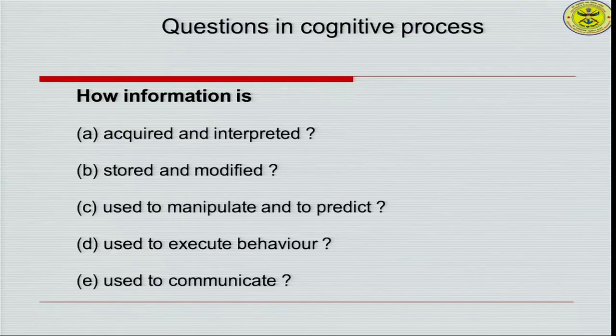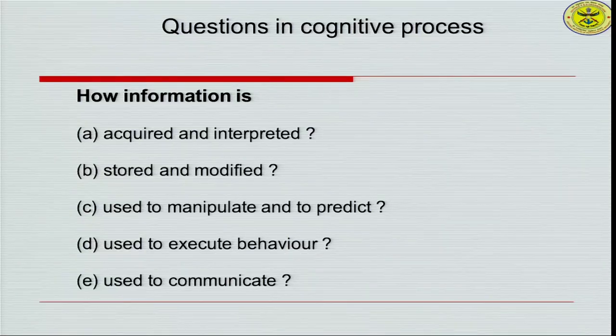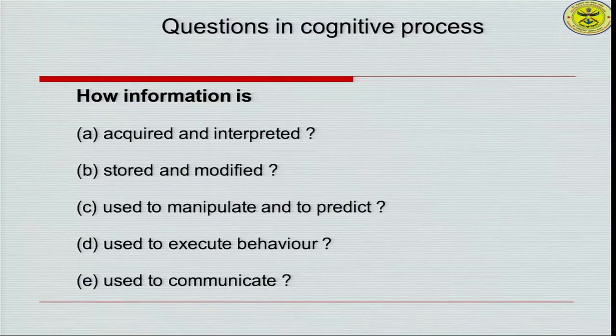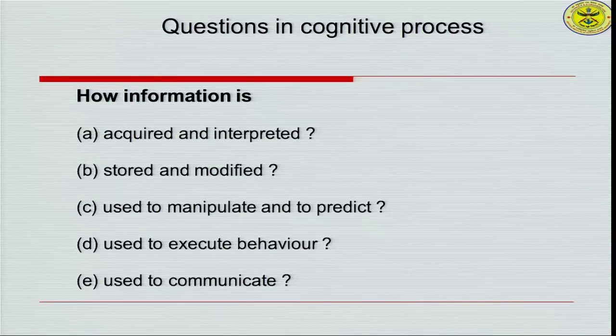Any information that is transformed into a formation is not a random input — any input that reaches the brain and is transformed in some kind of formation becomes information. Not all kinds of information are registered automatically and processed. The patterning of input in some formation is basically what cognitive science tries to understand: how these inputs are acquired, interpreted, stored, modified, used to manipulate and predict, executed as behavior, and utilized for communication. These are the basic questions in cognitive processes.